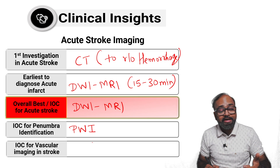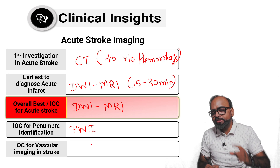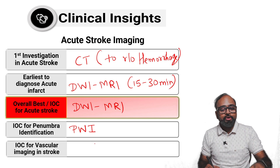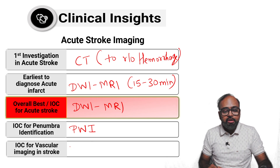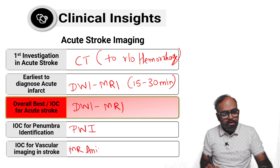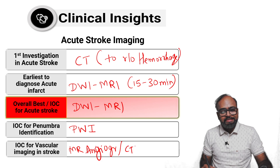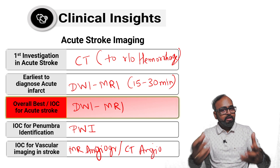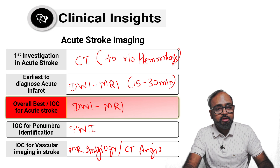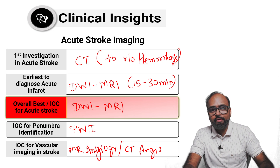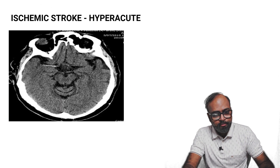Investigation of choice for vascular imaging — if you want to know which artery is blocked — you can do MR angiography, which is more commonly done, or CT angiography depending on available facilities. MR angiography can be done without the injection of contrast, so it is the preferred one.